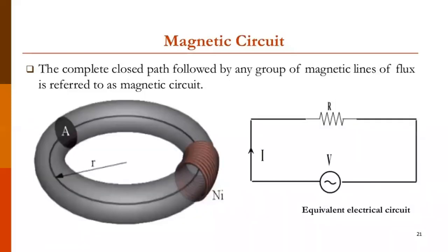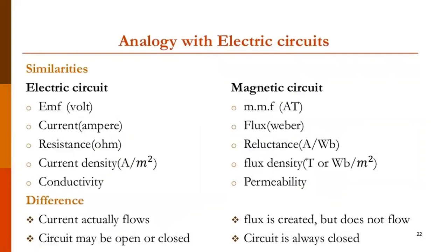Let us discuss the magnetic circuit. The magnetic circuit is the complete closed path followed by any group of magnetic lines of flux. A simple magnetic circuit has N number of turns of the coil wound on it. In the analogy between electric circuit and magnetic circuit: in an electric circuit there is EMF, while the analogous quantity in the magnetic circuit is MMF, with unit Ampere-Turns. In an electric circuit there is current measured in Amperes, while in a magnetic circuit the analogous quantity is flux, measured in Weber.